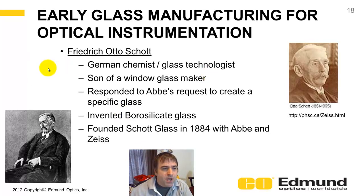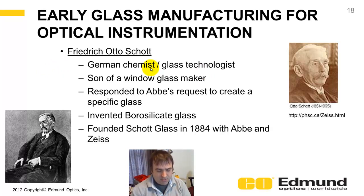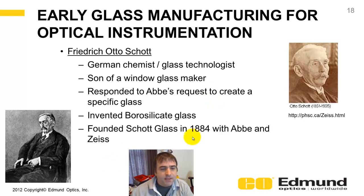Friedrich Otto Schott was an early glass manufacturer for optical instruments — a German chemist and glass technologist, and the son of a window maker. He responded to Abbe's request to create a specific glass, and along the way invented borosilicate glass. He founded Schott Glass in 1884 with Abbe and Zeiss.